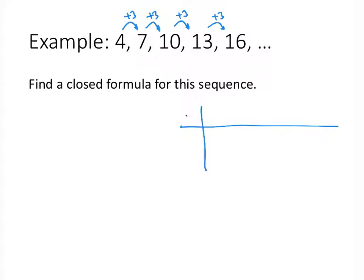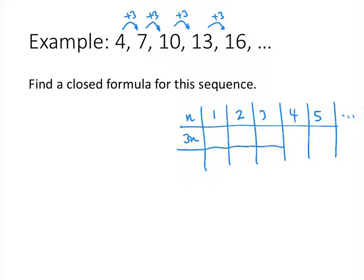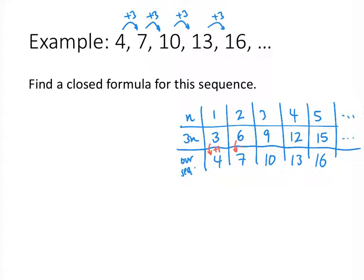We'll make a little chart. n just counts which spot we're on: n equals 1, 2, 3, 4, 5, and so on. And 3 times n gives us the multiples of 3: 3, 6, 9, 12, 15, and so on. Our sequence is 4, 7, 10, 13, 16. Do we see a relationship between that easier sequence and the sequence we actually have? We're adding 1 to get from the multiples of 3 to our sequence. So our sequence is 3n + 1. That's the closed formula: a sub n equals 3n + 1.